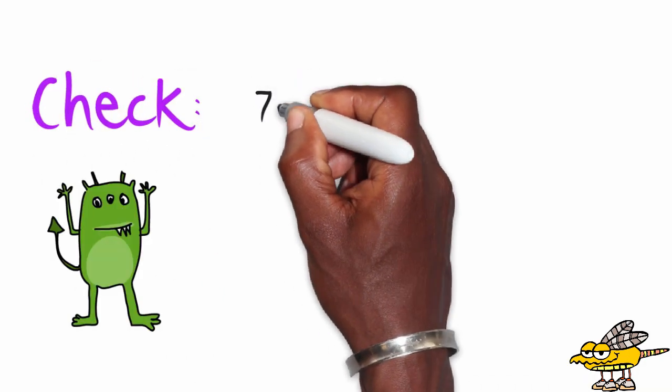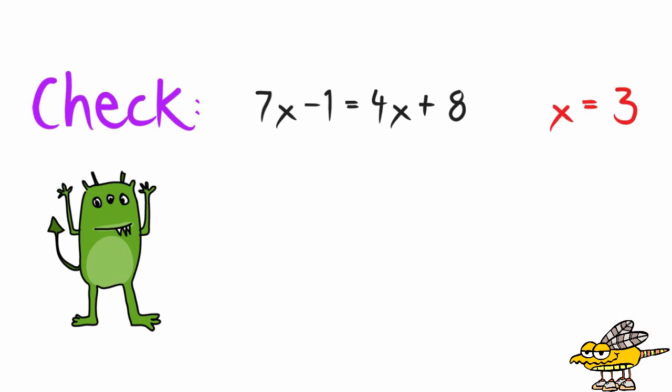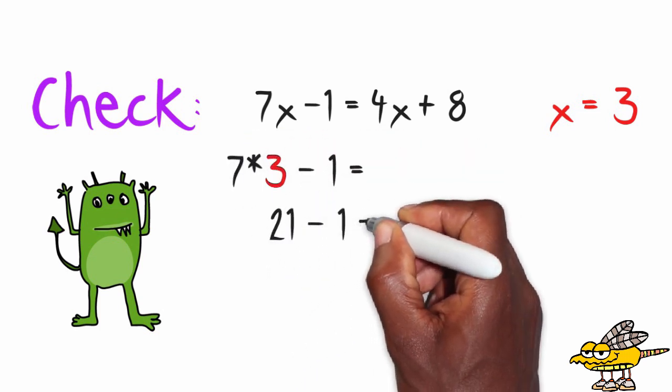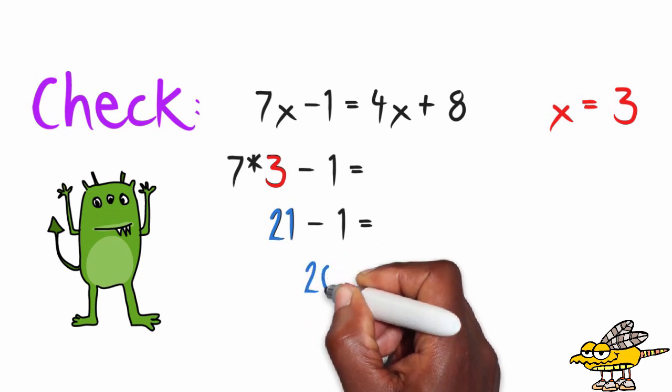And now I'm going to check that my solution x equals 3 is correct. So on the left side, I have 7 times x minus 1. So I'm going to replace the x with a 3. And I now have 7 times 3, which is 21. And then subtract 1. And I now have 20.